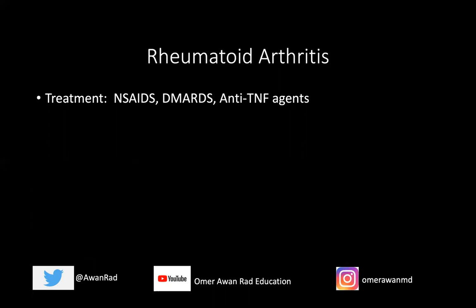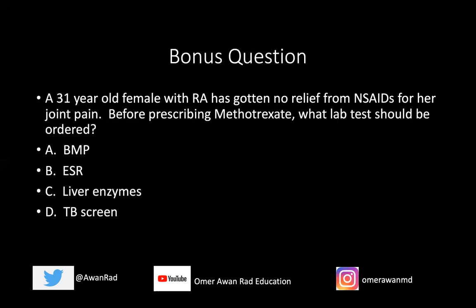We typically treat rheumatoid arthritis with NSAIDs, DMARDs — disease-modifying anti-rheumatic drugs like methotrexate — or anti-tumor necrosis factor agents, to decrease flares. Bonus question: a 31-year-old female with RA gets no relief from NSAIDs — before prescribing methotrexate, what lab tests should you order? The answer is liver enzymes, super high yield for the USMLE, because methotrexate can lead to hepatic fibrosis and cirrhosis. So always check liver enzymes first. If prescribing anti-TNF drugs, you would do a TB screen, because anti-TNF drugs can exacerbate and cause disseminated tuberculosis.